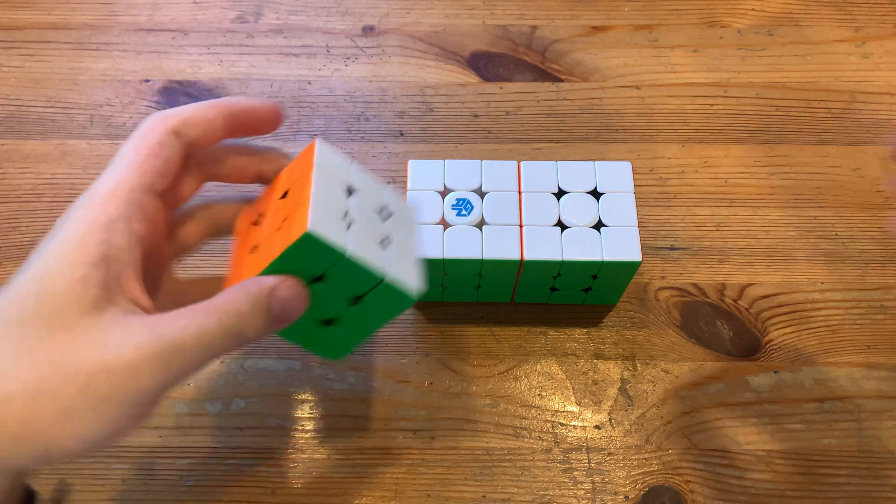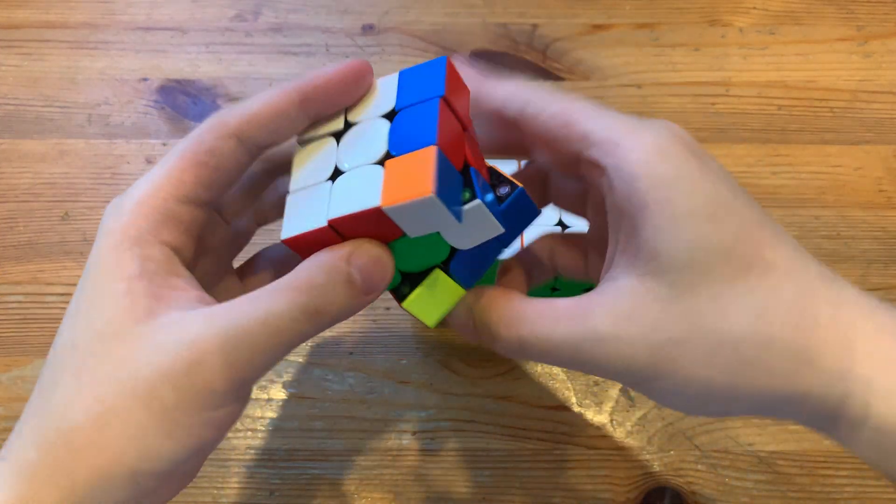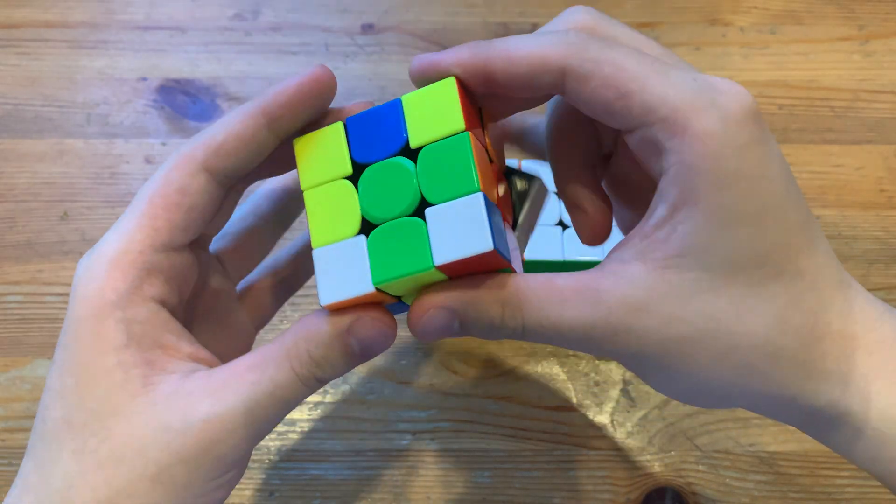So guys, this will be three advanced 3x3 example solves on white cross, and the scrambles will be in the description.